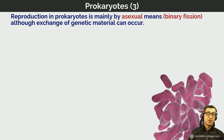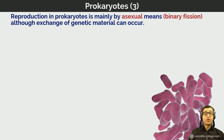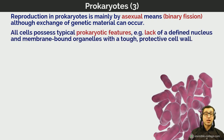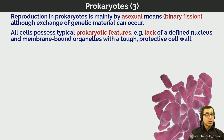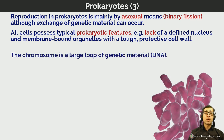All bacteria possess typical prokaryotic features: a lack of a defined nucleus, no membrane-bound organelles, and a tough protective cell wall. The chromosome in bacteria is a single large loop of genetic material. Unlike eukaryotes, where the DNA is linear and organized into chromosomes surrounded by a nucleus, in bacteria it is simply a very large single loop of DNA sitting in the middle of the cytoplasm without a nuclear membrane.